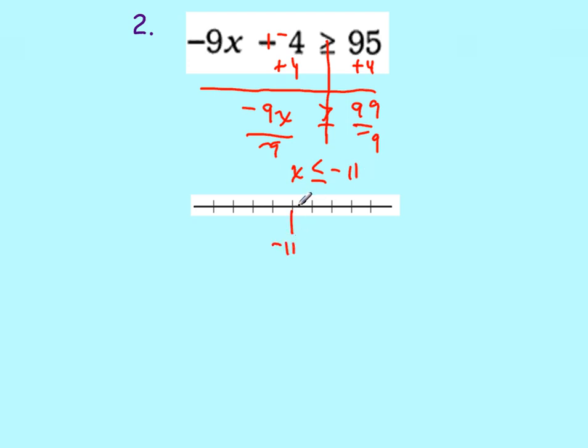And 99 divided by negative 9 is negative 11. So negative 11 is going to be my key number. It's going to get a closed circle. And I'm going to graph going to my left. That's your answer for number 2.